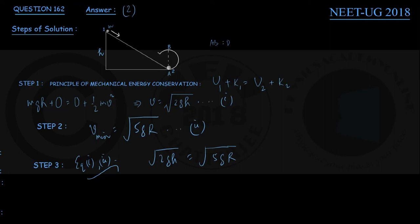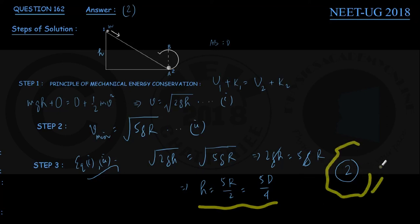And then squaring both sides, we are getting 2gh = 5gR. The g is canceling out. h is coming out to be 5R/2. But since R is D/2, isn't it? Diameter is D, so R is D/2. h is coming out to be 5D/4. So that is also our choice, option number 2. So you have got the height required for the inclined plane, and also the correct option is 2. That is the end.